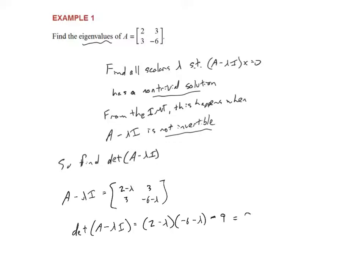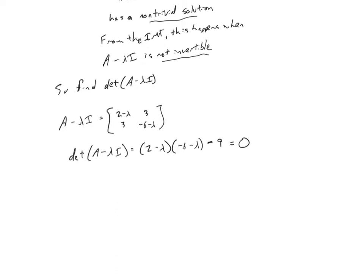We set that determinant equal to 0 because when it's 0, the matrix is not invertible. When you distribute and simplify you get λ² + 4λ − 21 = 0. We do a little regular algebra, factor to get (λ − 3)(λ + 7) = 0. So that tells us λ = 3 or λ = −7, and we have our two eigenvalues for this matrix.